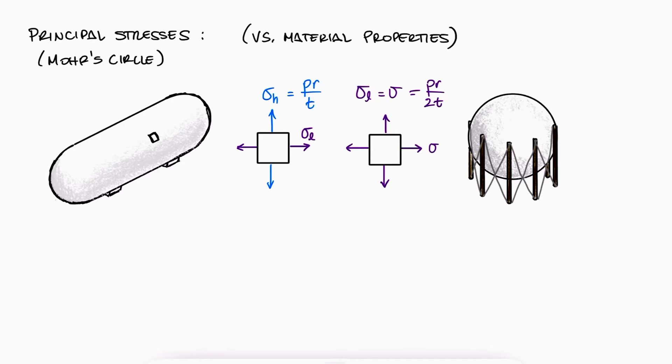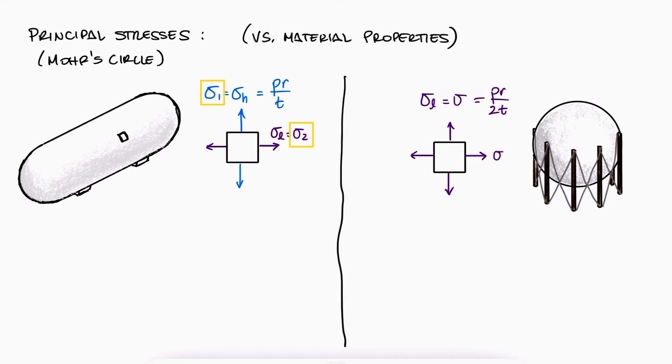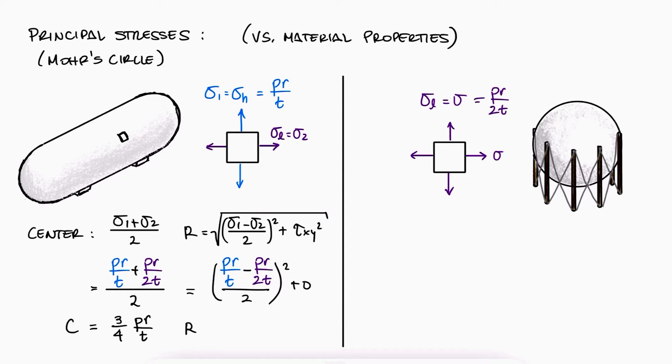For cylindrical pressure vessels, our stress element has two normal stresses, sigma1 and sigma2, and no shearing stresses. With the Mohr's circle expressions we derived in the previous main video, linked below, we can find the center of the circle and its radius.